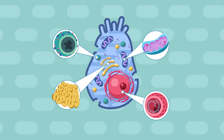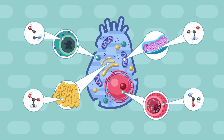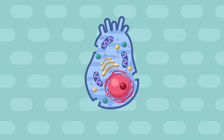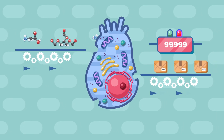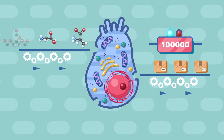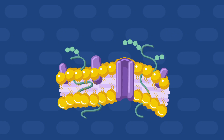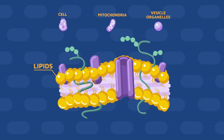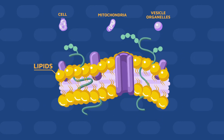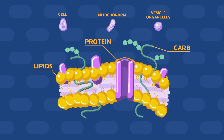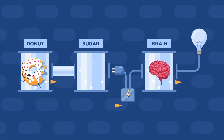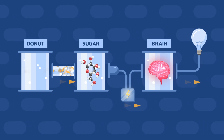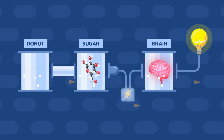Organelles are huge molecular complexes that consist of simpler organic molecules. The most abundant of those building blocks are proteins. Using simpler organic molecules, cells can generate about 100,000 different types of proteins for their own purposes. Lipids are mostly used to build the membranes of cells, mitochondria, and various vesicle organelles. Those membranes also have insertions of different kinds of carbs and proteins. Sugars, or carbohydrates, are heavily used for energy production. The body breaks carbohydrates into glucose, which it uses to fuel brain activity.